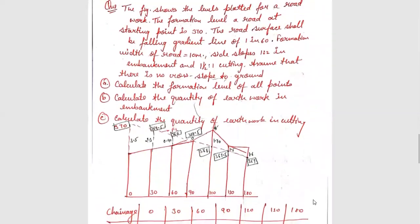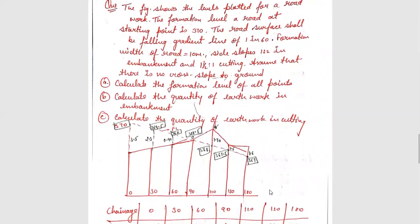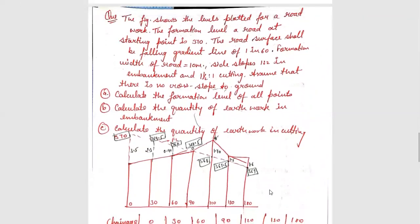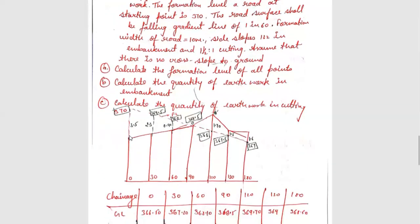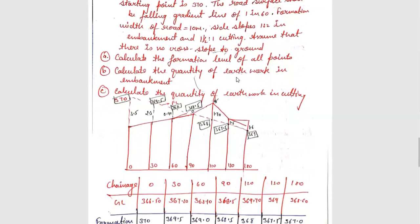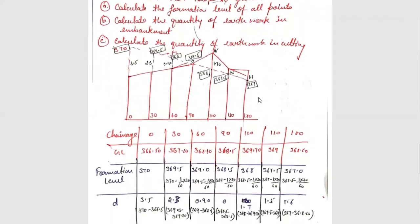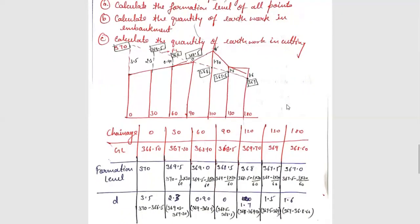Next question: the figure shows a longitudinal section plotted for a road work. The formation level of the road at the starting point is 370. The road surface shall have a falling gradient of 1 in 60. The formation width is 10 meters, side slope 1:2 for embankment and 3/2:1 for cutting. Assume no cross slope on the ground. We need to calculate the formation level, quantity of embankment, and quantity of earthwork in cutting.